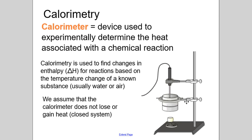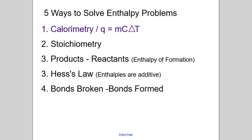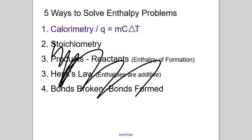As I said, calorimetry is one of the ways to solve enthalpy problems — it's not the only one. There are five total ways to solve enthalpy problems; this is just the first of those five. Every single way to solve an enthalpy problem is different depending on what information the problem gives you. In this case, the problem needs to tell you three things: some mass value, c which is specific heat capacity, and a change in temperature. If those three things are not there, it has to be one of the other problem types.